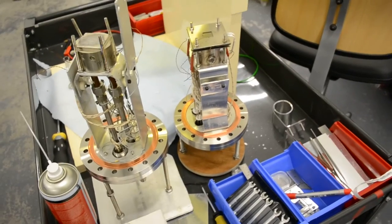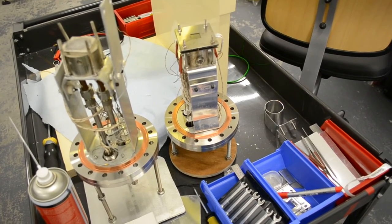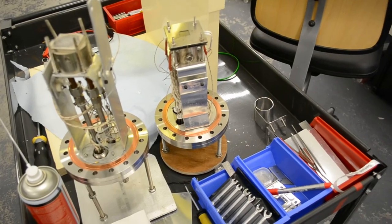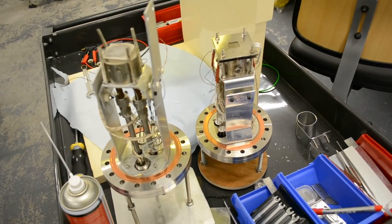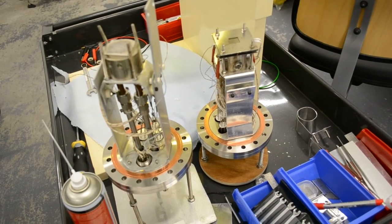This is the chamber where the stage with the sample is to be mounted, the end of the beam line. Here is the stage. The sample will be mounted through this tantalum shield. The scanning area can be from 0.5 to 6 cm square.